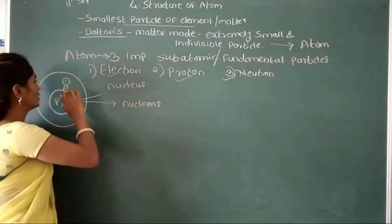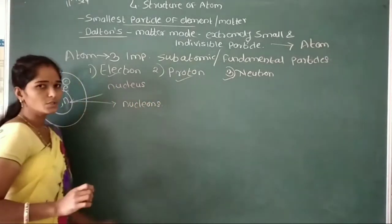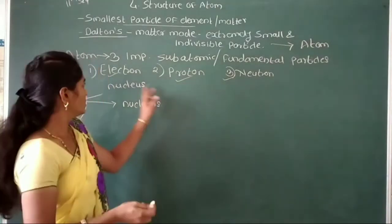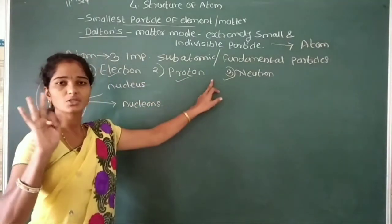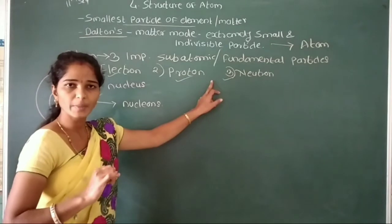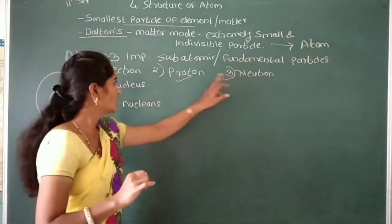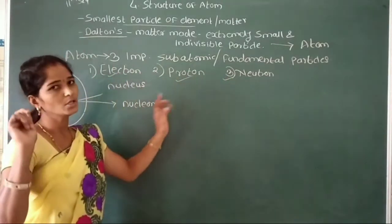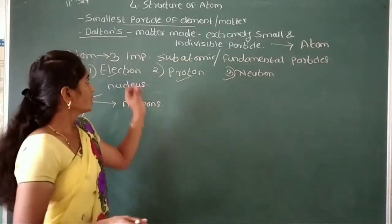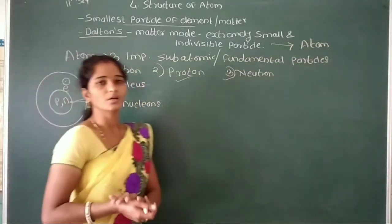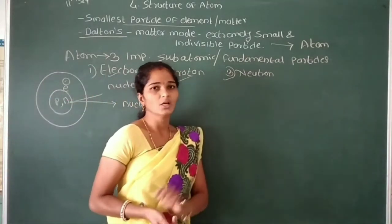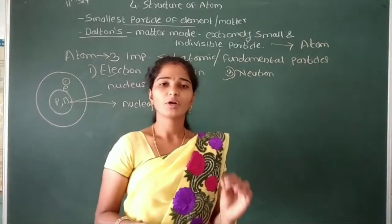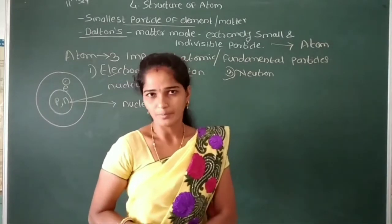So, in the distribution of these 3 sub-atomic particles: 2 are present in the nucleus, and 1 surrounds the nucleus. This is the definition of atom, and these sub-atomic particles are the fundamental particles of atom.